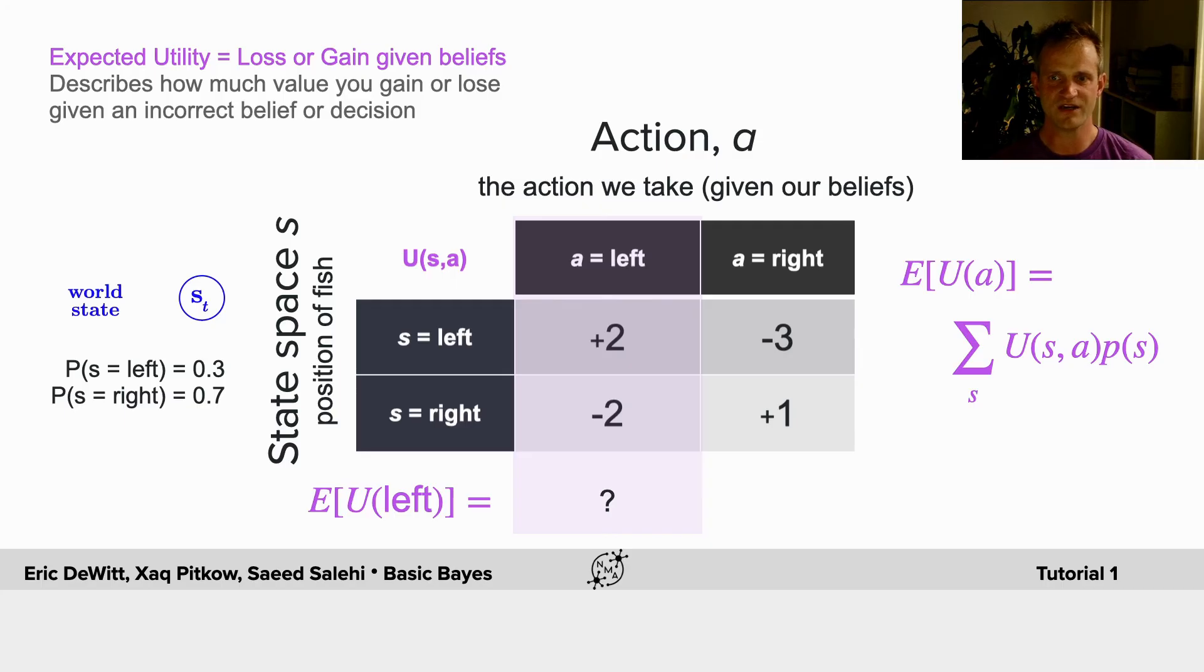So, here, we have to sum over the utilities and the probabilities of where the fish are. So, the probability of the fish being on the left, which is 30%, the probability of the fish being on the right, which is 70%, and the utilities associated with those states and those actions.